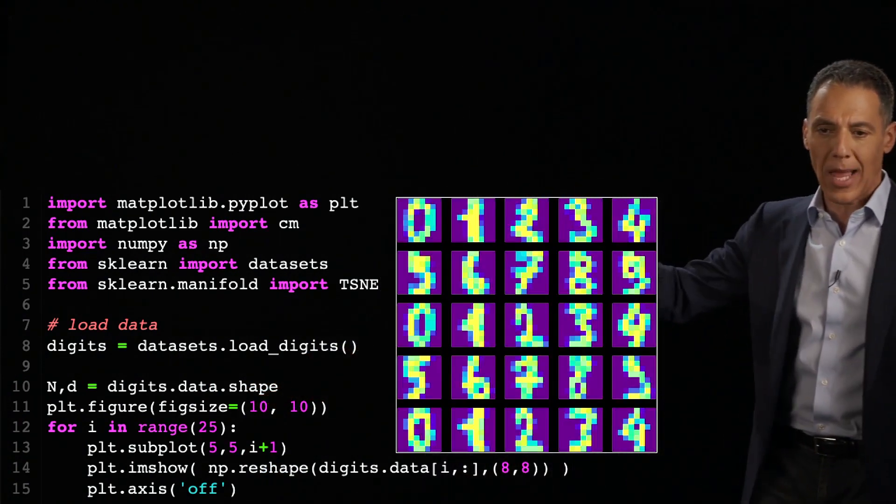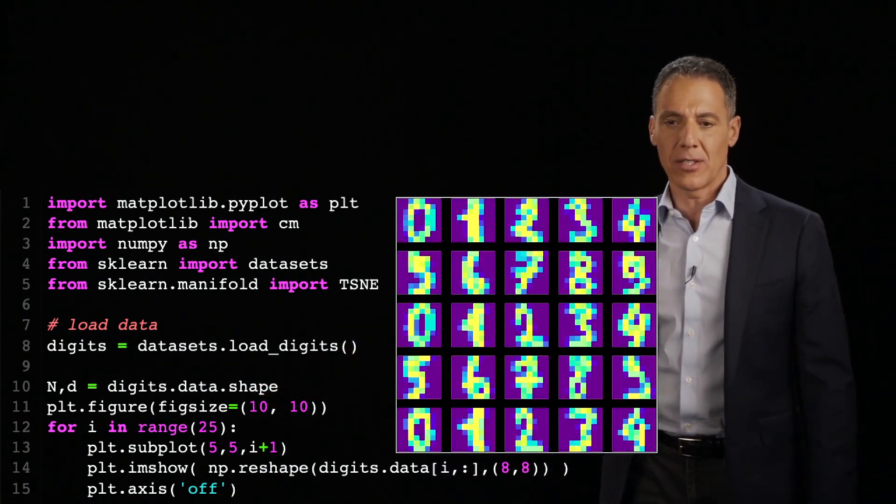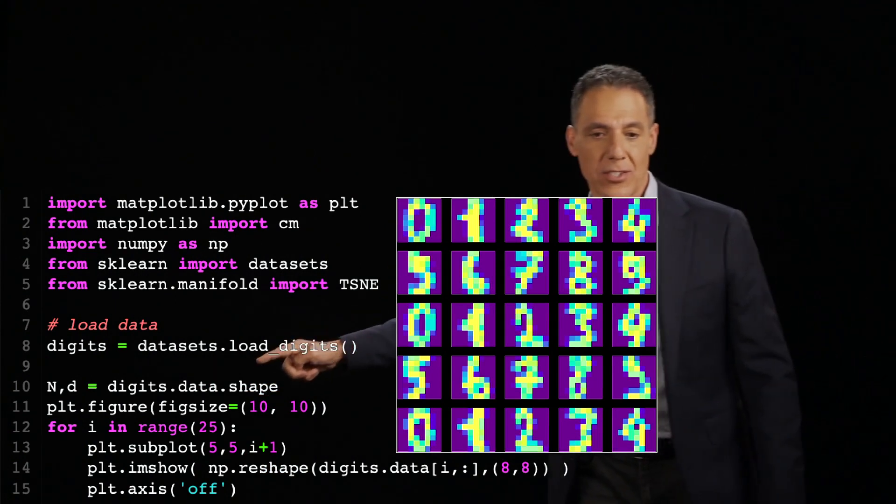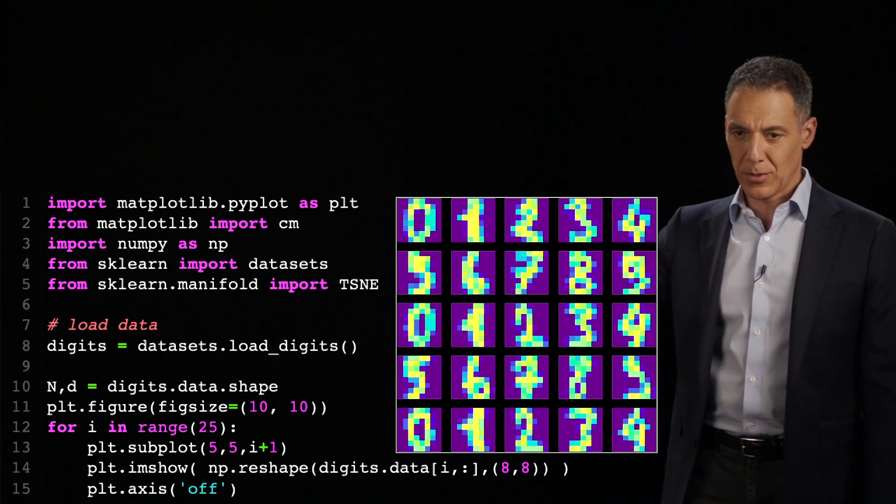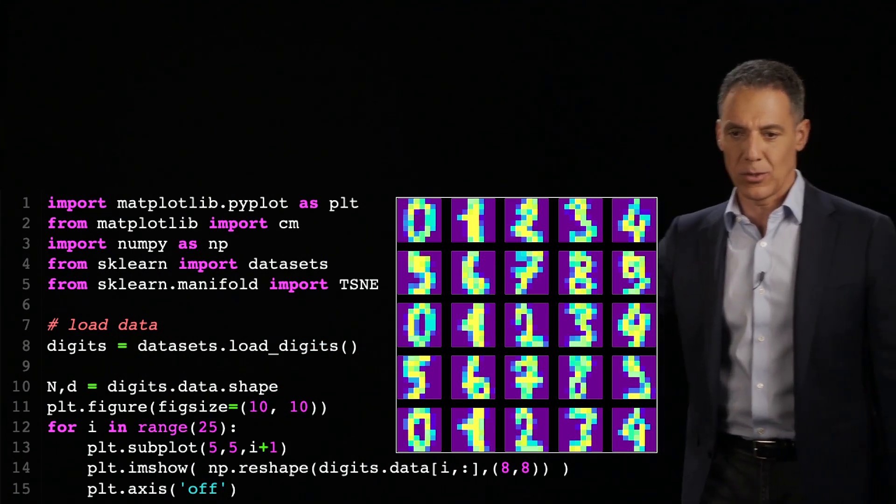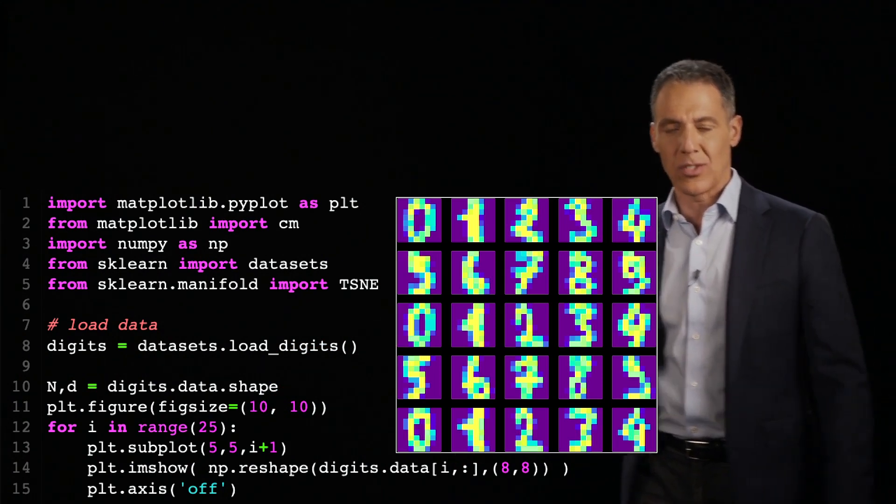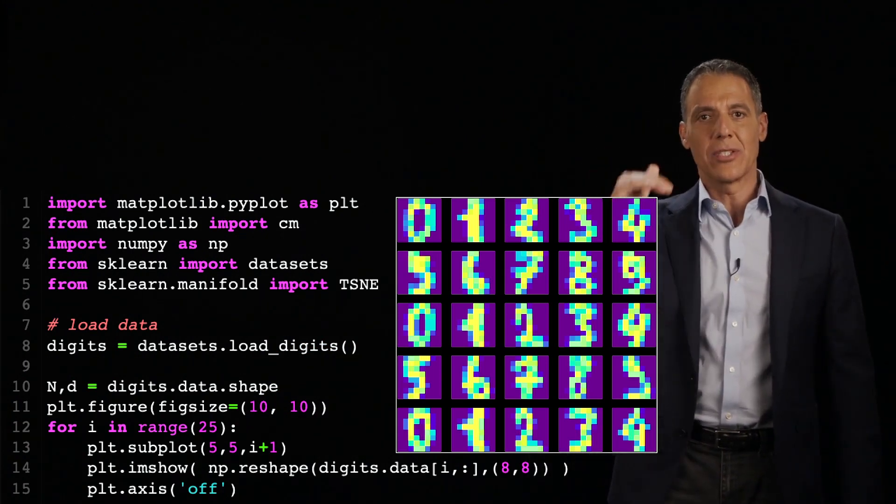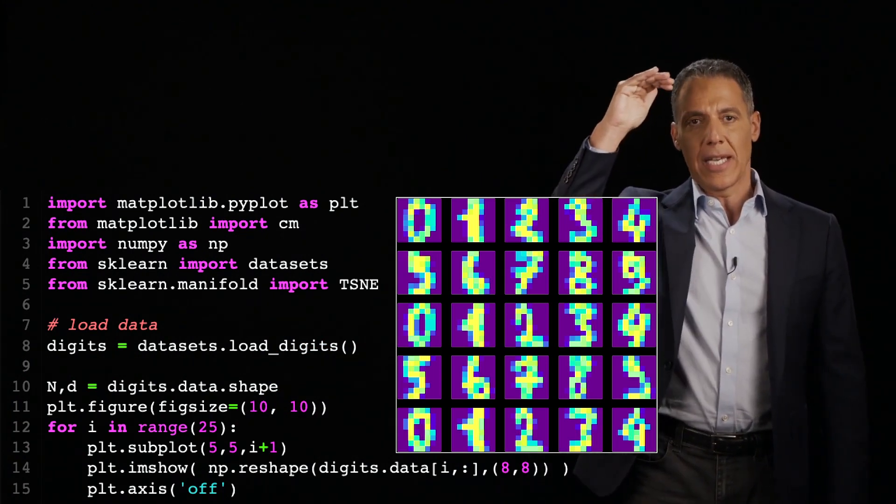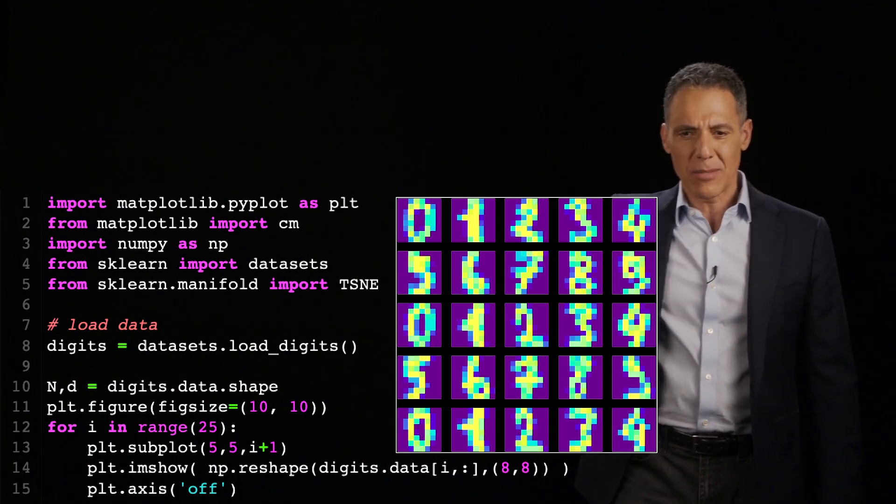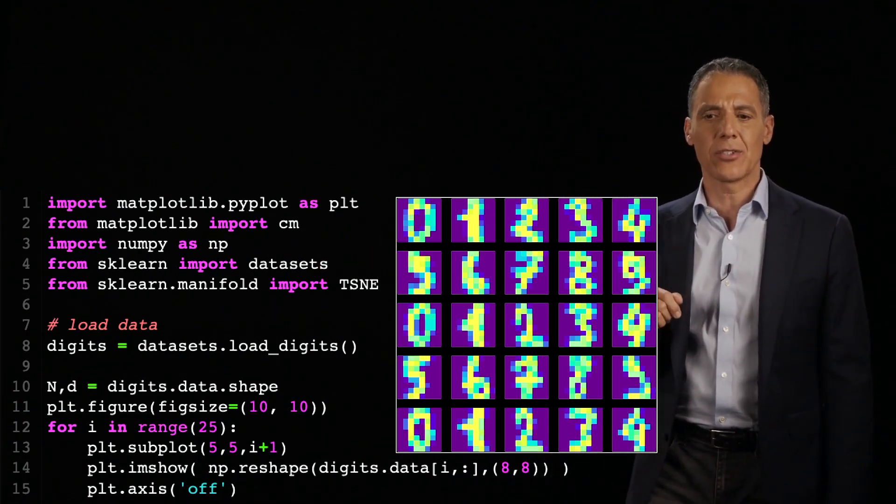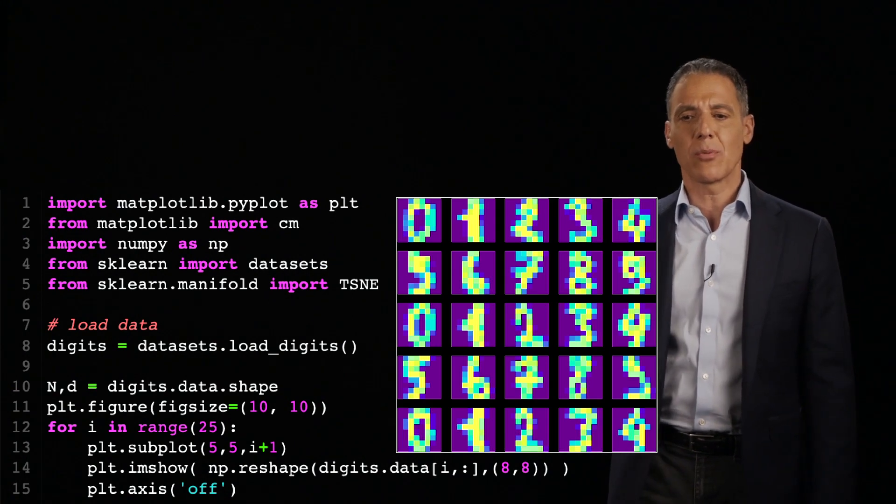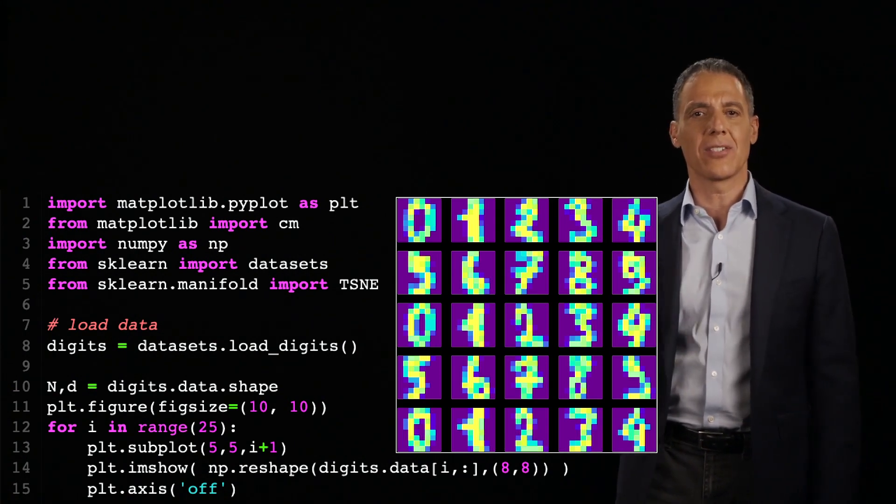So here's the result of visualizing just a subset of the first 25 digits. You can see I'm just visualizing 5 by 5 in a subplot. So I've got 0 through 9, and then it repeats 0 through 9 again. So what this dataset is is a series of images, and you can see they're slightly different. These are handwritten characters. And we're going to see what happens when we feed all of this data into TSNE.